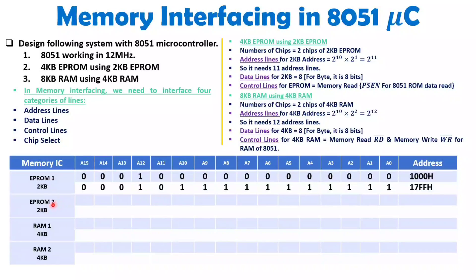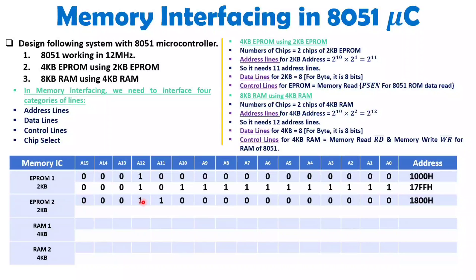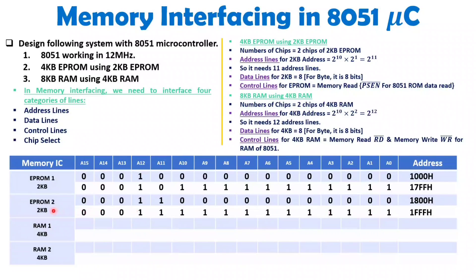EPROM2 starts at the next address after 17FFh. Setting the next bit gives 1800h — that is 0001 then 1000 then all zeros. EPROM2 also has 11 address lines, so A0 to A10 transition from all 0s to all 1s, giving an ending address of 1FFFh.